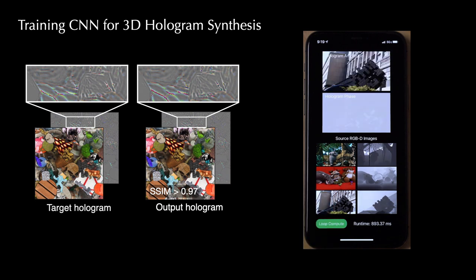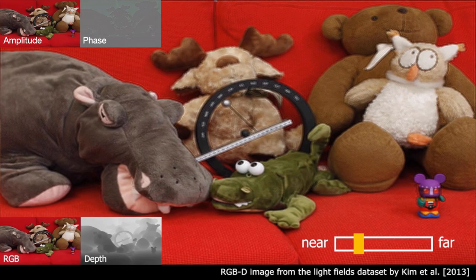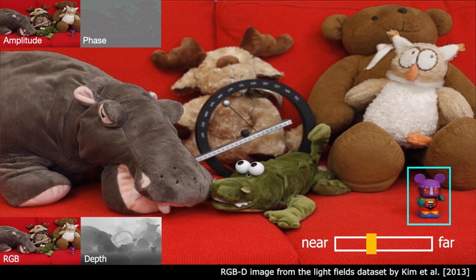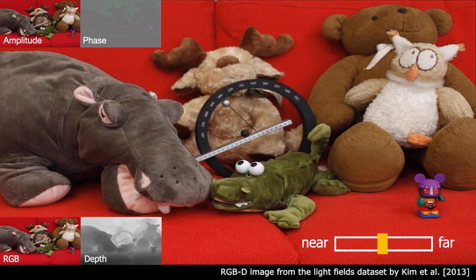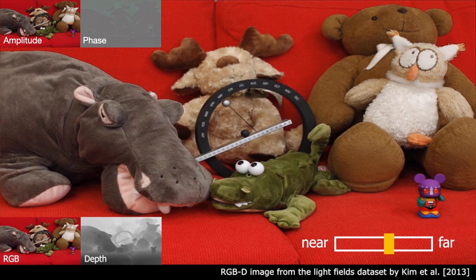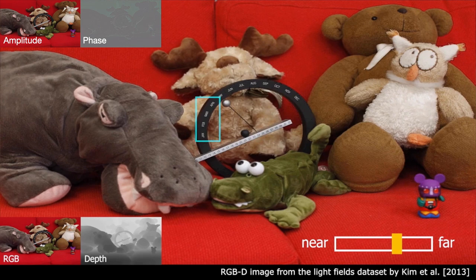The trained CNN also generalizes to real-world scenes. Here, we demonstrate a simulated focal sweep of a real-world couch scene by refocusing the predicted hologram to different depths. Note how the different objects go in and out of focus as we sweep through the scene.